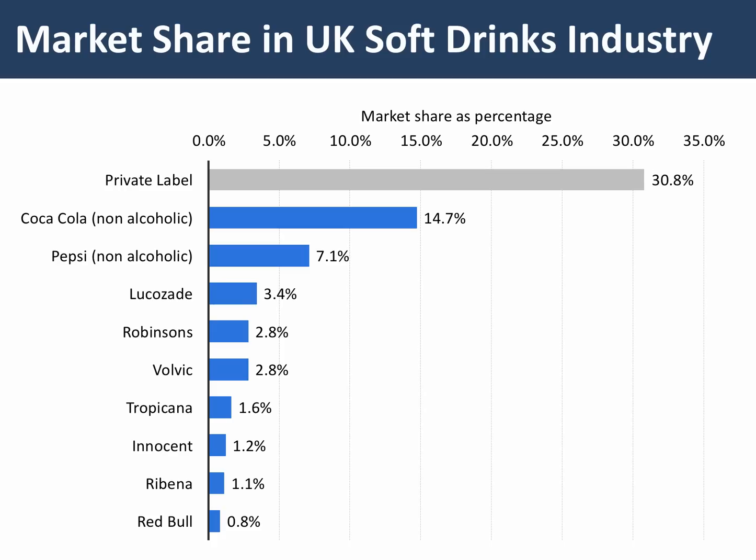If we look at the soft drinks industry in the UK — this is the percentage market share in 2015 — there were lots of private label soft drinks produced and sold by the supermarkets. Coca-Cola has nearly 15%, Pepsi 7%, and so on. If you were to add those top five firms excluding private label, you'd be less than 40%. So this is a less concentrated market, partly because of the preponderance of private label soft drinks available in supermarkets.